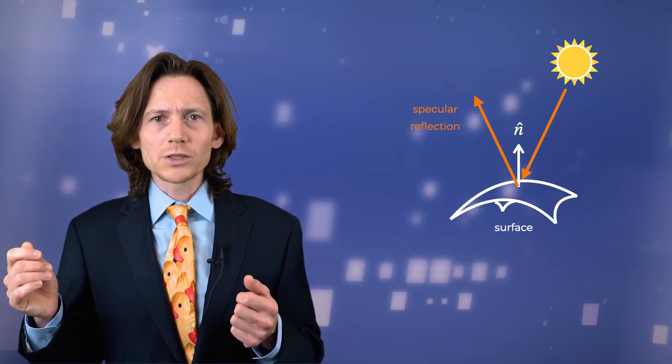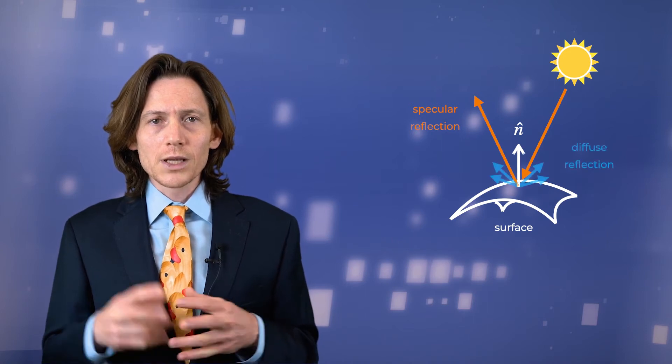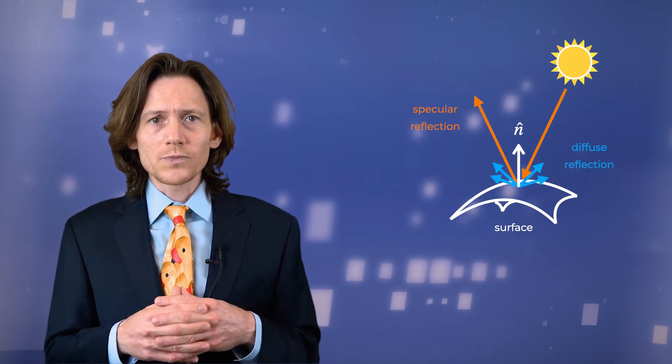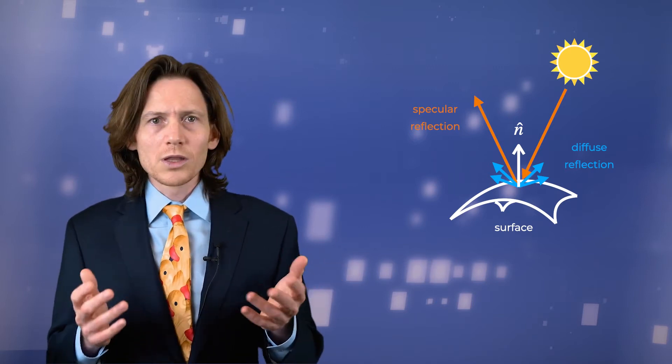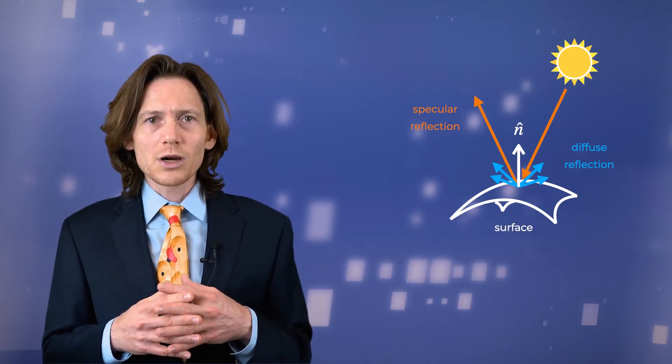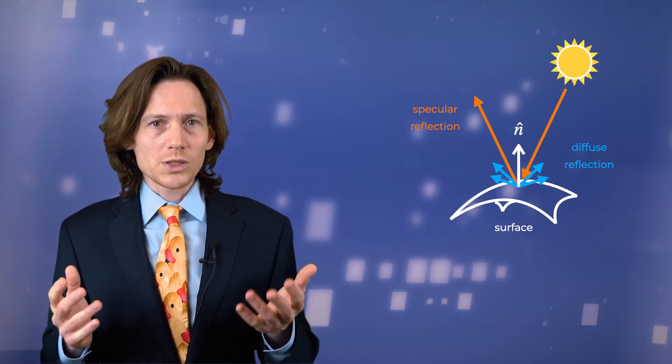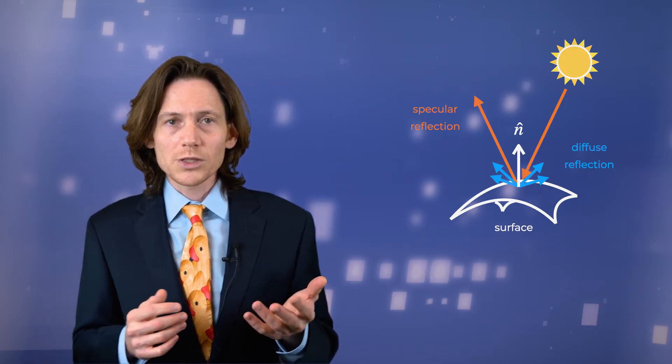Incident light reaching this point reflects in one of two ways: specular reflection, the mirror-like reflection whereby light reflects off the surface at an angle equal to that of the incident light ray, and diffuse reflection, in which the incident light ray is scattered at many different angles.